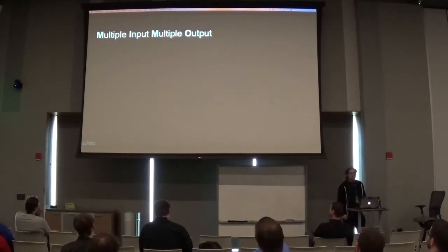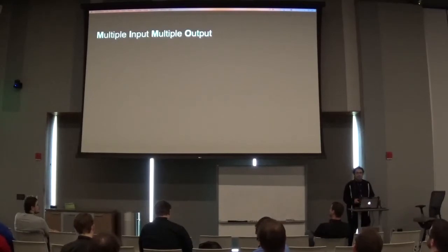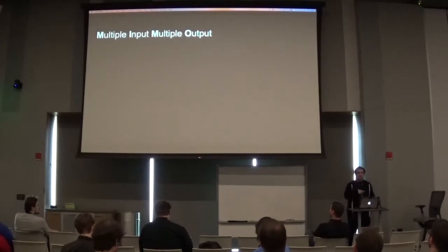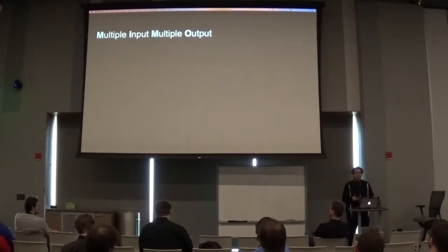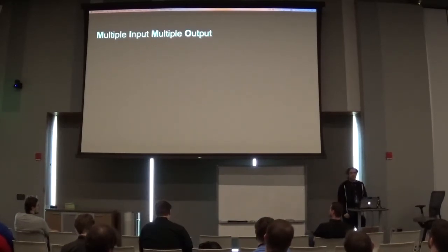Multiple Input and Multiple Output: if you're not using MIMO, you can essentially only send data streams one at a time. With MIMO, you can actually break up a single data stream into multiple spatial streams, each of which is transmitted by an antenna. So the number of spatial streams is limited by the number of antennas you have. If you have six antennas, you can break your signal up into six pieces and transmit more of it at once.